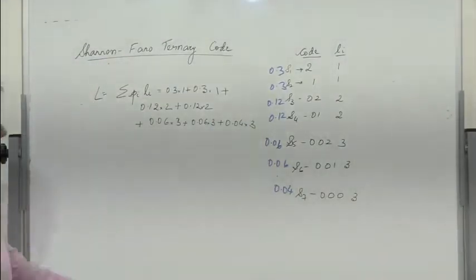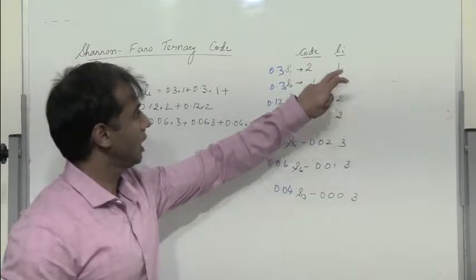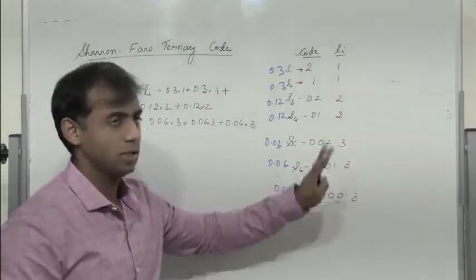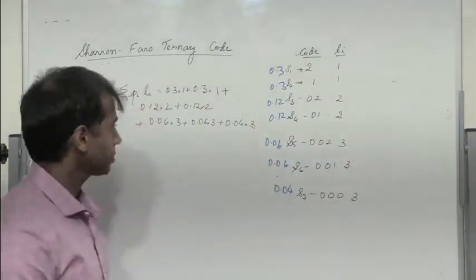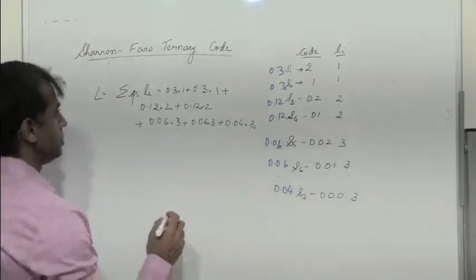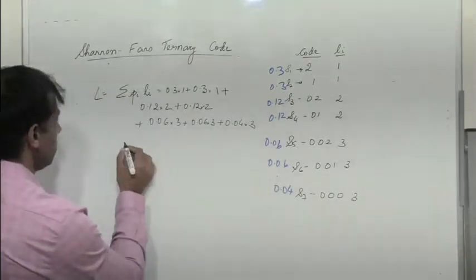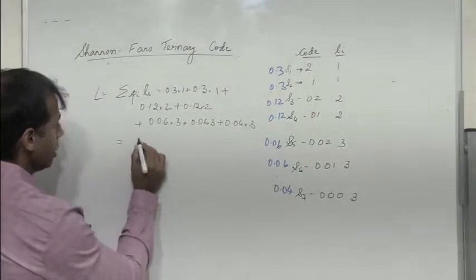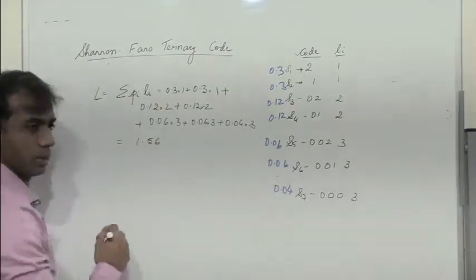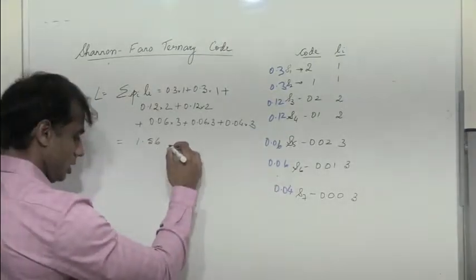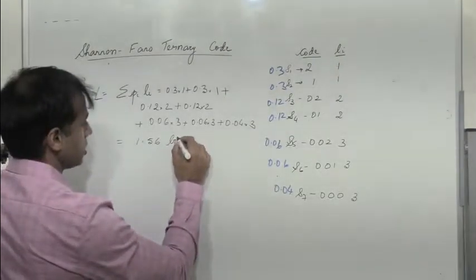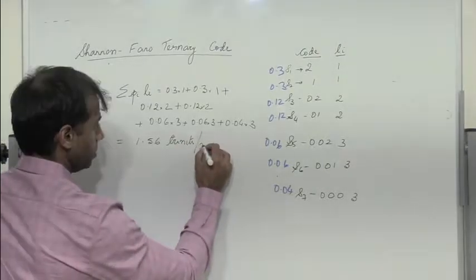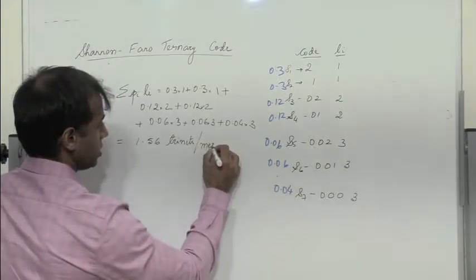The code lengths are 1, 1, 2, 2, 3, 3, 3. Computing the sum, we get L = 1.56 trinary units per message symbol.